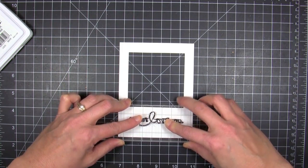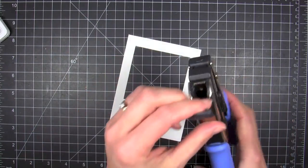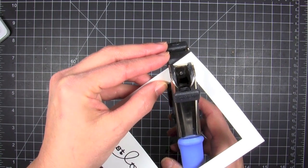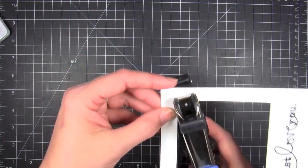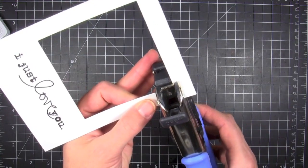I'm gonna stamp that on the lower portion there of my Polaroid frame. Once I have that in place, I'm ready to create that effect where I'm hanging this heart inside the frame. I'm using my power punch just to punch some tiny holes on each side of the frame.